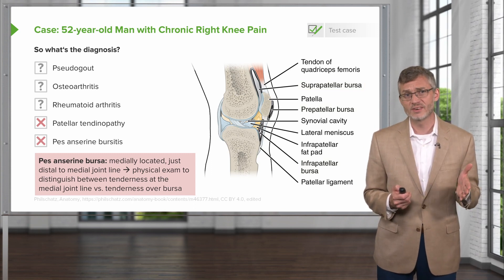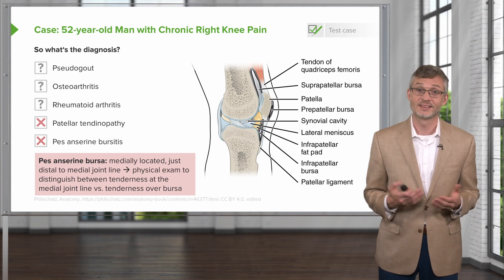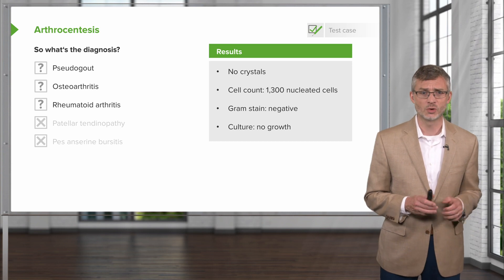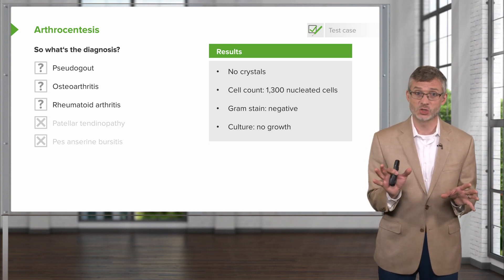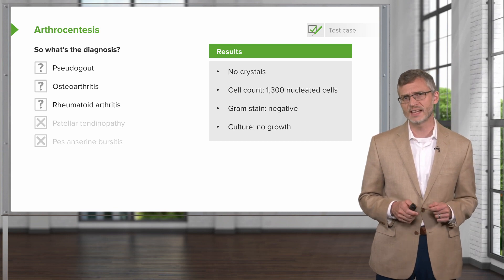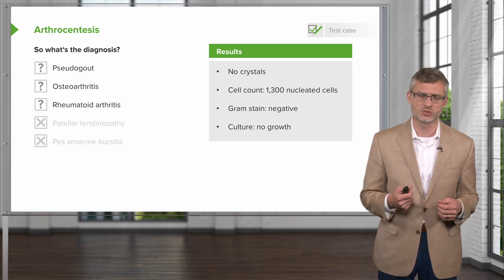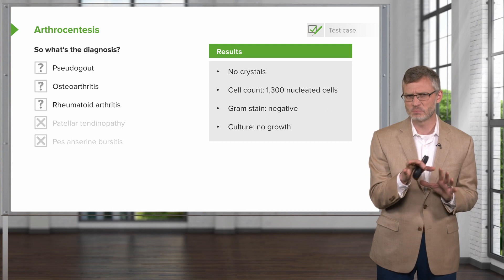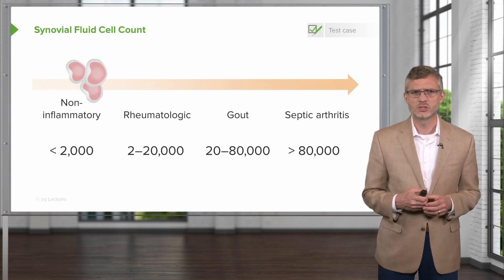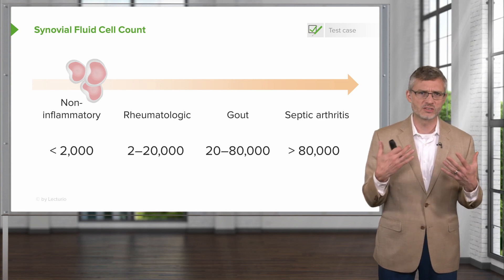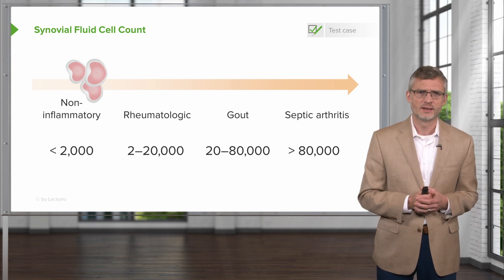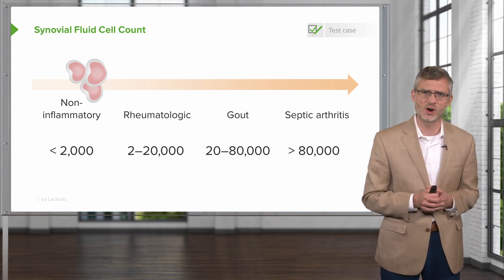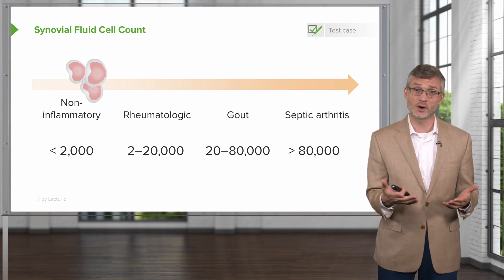So we're left with pseudogout, osteoarthritis, and rheumatoid arthritis. Looks like we're going to need an arthrocentesis to tease this apart. Here are our results: no crystals — that's reassuring. Cell count is 1,300 nucleated cells, gram stain is negative, and culture shows no growth, ruling out septic arthritis. Looking at a schematic for interpreting synovial fluid cell count, our cell count of 1,300 puts us into the non-inflammatory column on the far left of the spectrum, which supports osteoarthritis.